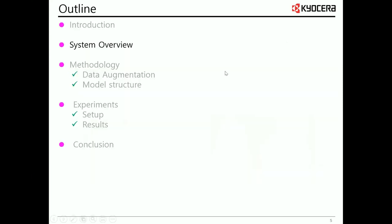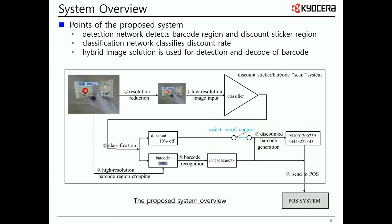The system architecture is designed as shown in this figure. The part inside the frame is the proposed system, and the gray background part shows the POS system. We first input the camera input, then use a classification network to detect the discount sticker region and barcode region, and determine the classification category of them. Categories include various discount rates and barcodes.